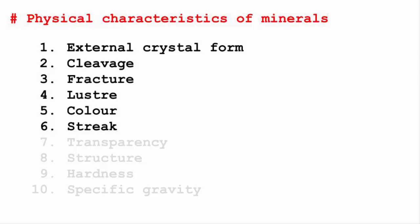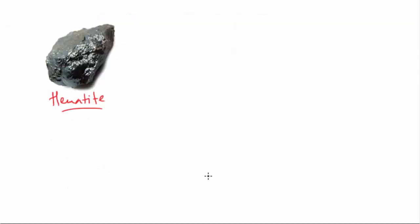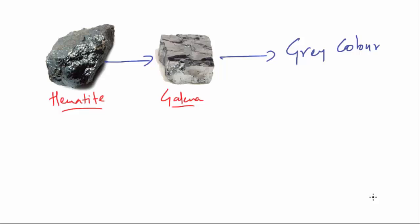The sixth property is streak. Streak is the color of a mineral substance when it has been ground to a fine powder. So two minerals that have similar color on the outside may have different colors when they are powdered. For example, hematite and galena—we can easily get confused when we look at their color, which is gray. However, hematite's streak is blood red while galena's streak is lead gray.